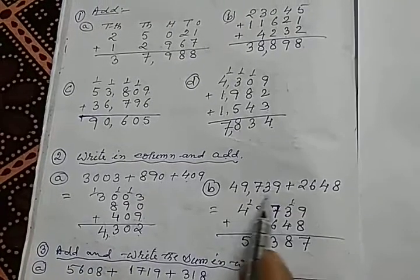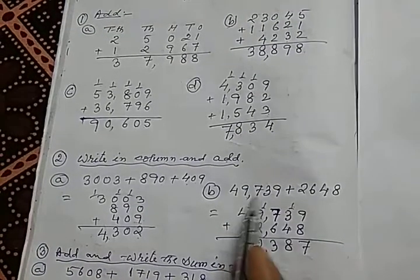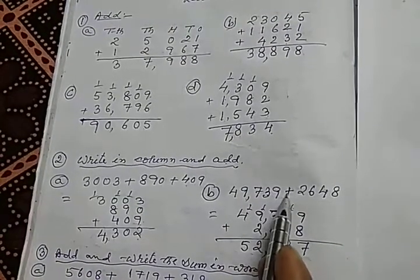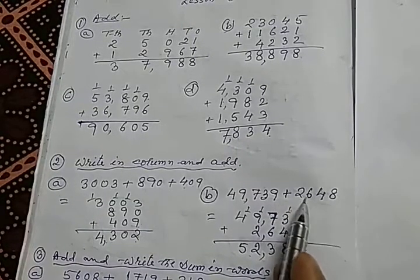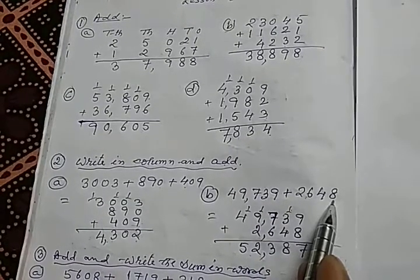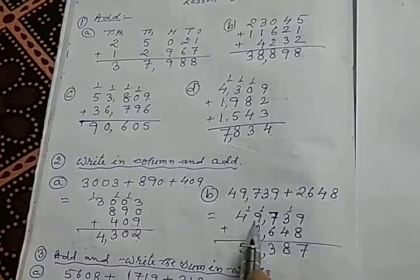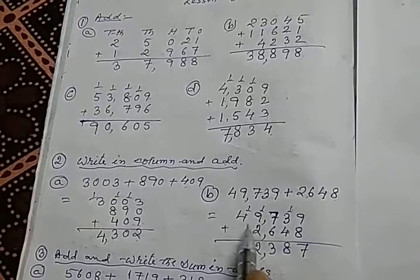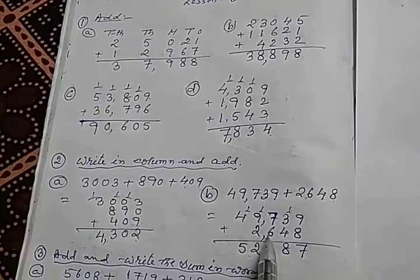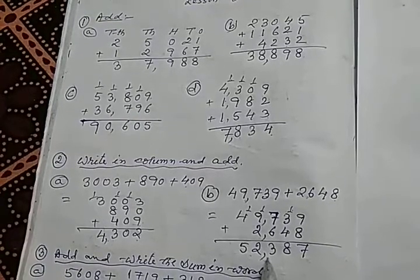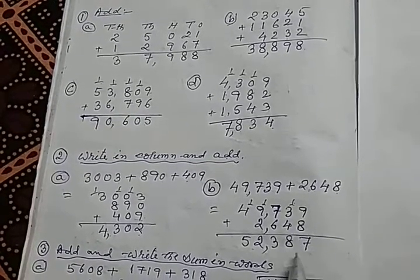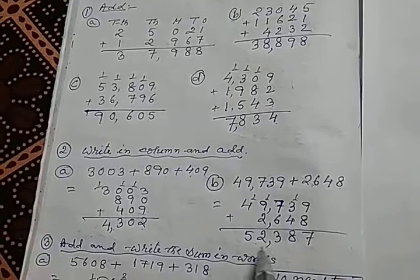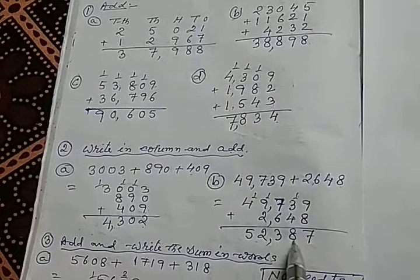There are two numbers, 49,739 plus 22,648. Now, as per the rules, we have arranged these two numbers in column first time. Then, we have added these two numbers. The result is 52,387.